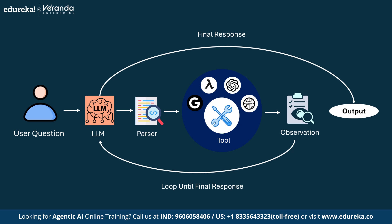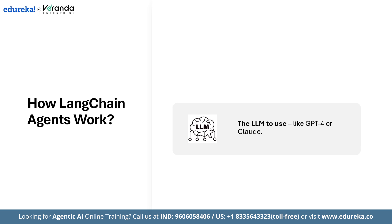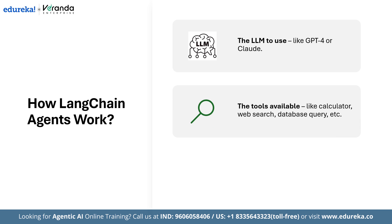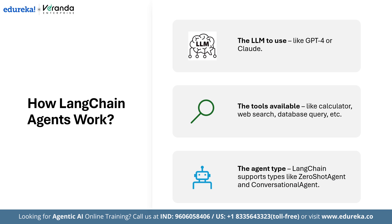Now let's look at the inner workings of a Langchain agent. When you create an agent in Langchain, you define three things: first, the LLM to use, like GPT-4 or Claude; next, the tools available, like a calculator, web search, or database query; and finally the agent type. Langchain supports types like the zero-shot agent and the conversational agent.